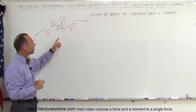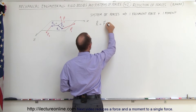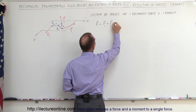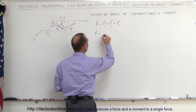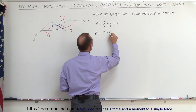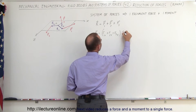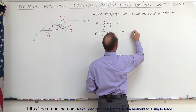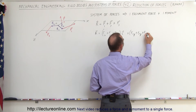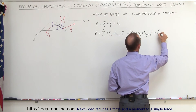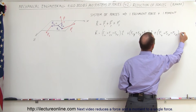The first thing we're going to do is combine all the forces. The resultant force is simply the vector sum of the three forces — F1, F2, and F3 — which means the resultant is the sum of the X, Y, and Z components of each force. So the X components of F1, F2, and F3 give the I direction of the resultant; the Y components give the J direction; and the Z components of F1, F2, and F3 give the K direction.